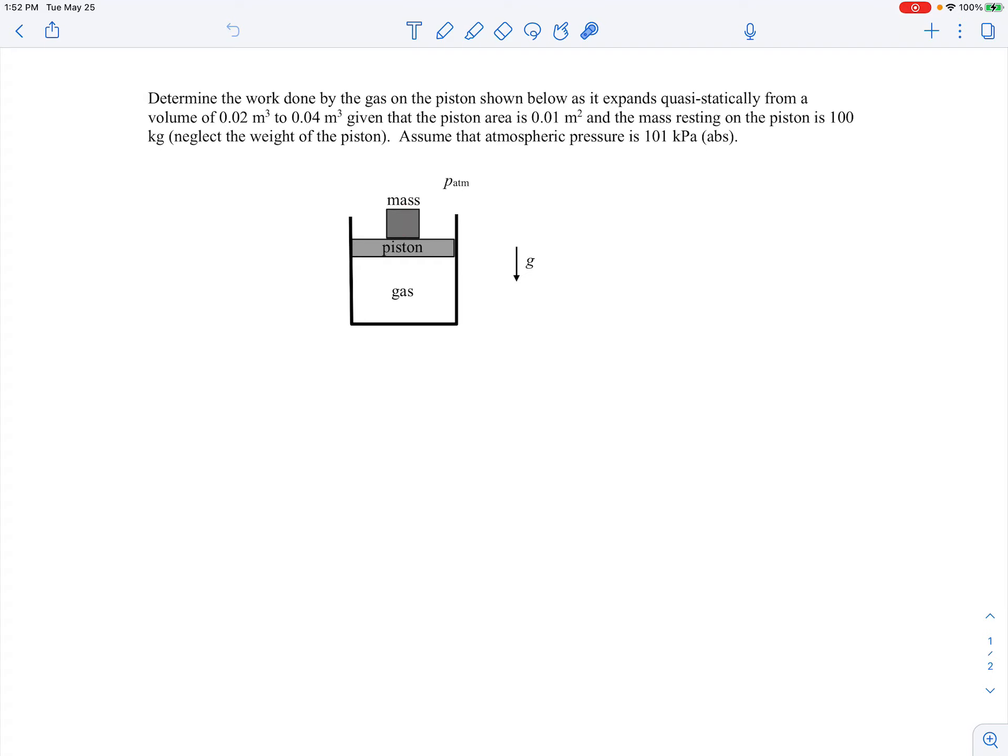The mass resting on the piston is given as 100 kilograms, so we're told to neglect the weight of the actual piston itself. We're also told to assume that atmospheric pressure is 101 kilopascals absolute.